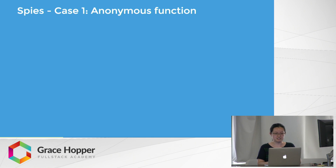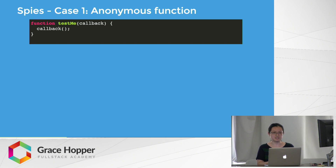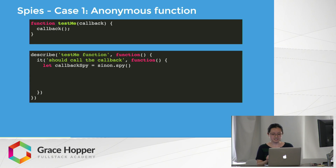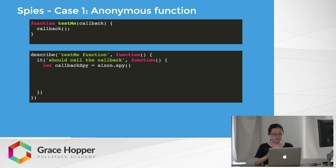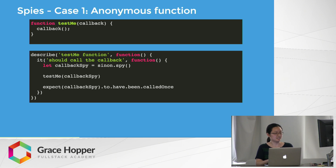Here's a simple unit test example using spies as anonymous functions. There's a function called testMe — it's very simple, it just takes a callback and invokes it. In a Mocha-style test checking whether testMe calls the callback, within the 'it' block we have a callback spy made by invoking sinon.spy(). This is an anonymous spy. We call testMe using that spy, and then check that the callback spy has been called once, which should return true if the function is working.